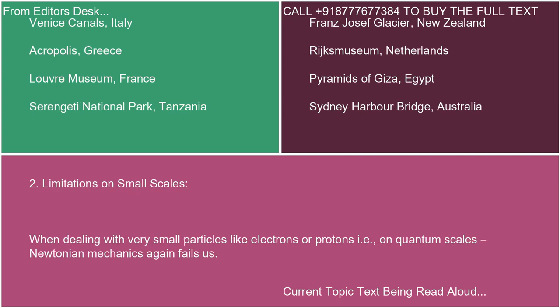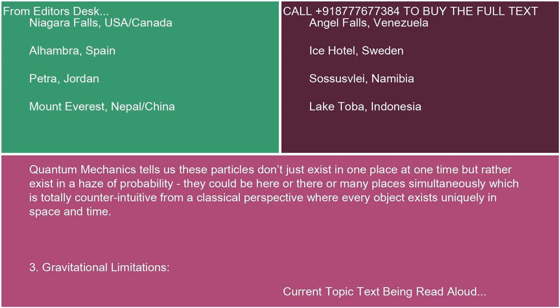Two: limitations on small scales. When dealing with very small particles like electrons or protons — i.e., on quantum scales — Newtonian mechanics again fails us. Quantum mechanics tells us these particles don't just exist in one place at one time, but rather exist in a haze of probability. They could be here or there or many places simultaneously, which is totally counterintuitive from a classical perspective where every object exists uniquely in space and time.